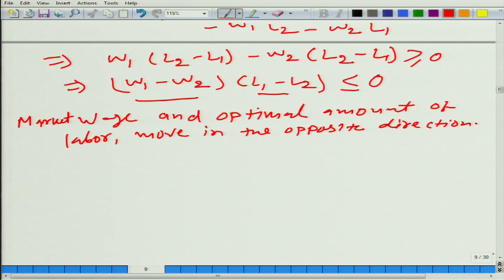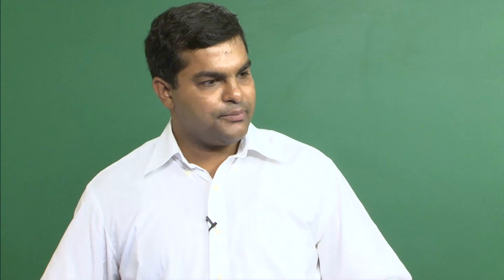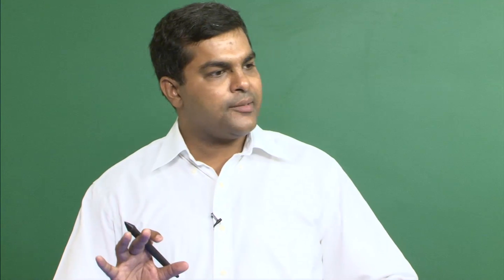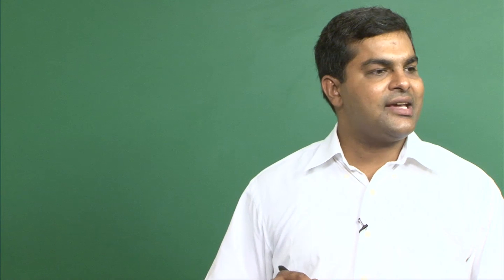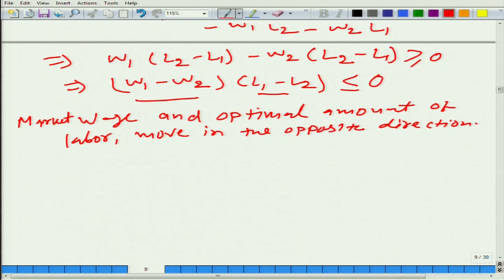Now we are going to do this using calculus — exactly the same result we will get. This is quite important: you understand the diagram, you understand the algebra. Of course these all have origin in different techniques, but right now we are learning about profit. So let us use calculus. The firm is acting as a price taker; it is not able to rig the price. So what is the profit? The small pi is nothing but the maximized amount of profit that this firm can obtain.